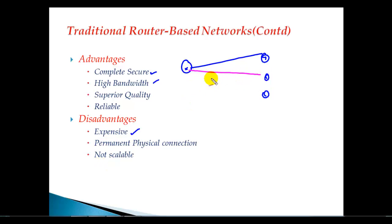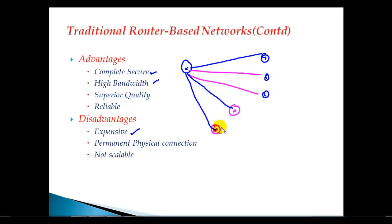Not scalable means if you're connected to three branch offices and in future you add two more branch offices that need to communicate with the head office, you need separate dedicated connections for each. As the organization grows and more branch offices are added, you need more and more dedicated leased line connections. It's really difficult for the service provider to provide a separate dedicated line for each and every site — so it's really not a scalable solution.